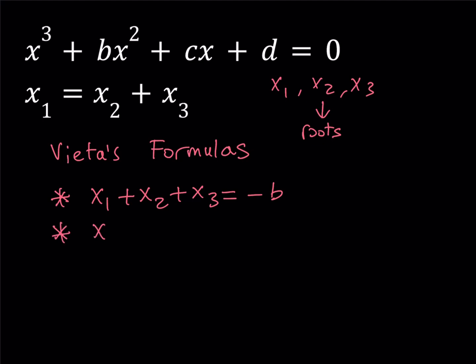The second relationship is the sum of two-way products: x1*x2, x1*x3, and x2*x3, and that is equal to c over a, which is equal to c.